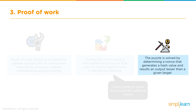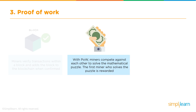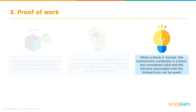The puzzle is solved by determining a nonce that generates a hash value resulting in an output less than a target. In any proof of work algorithm there is always a predefined target for a block. The miner uses the nonce to generate a hash which must be less than the target. Miners verify transactions within a block and add the block to the blockchain once verified. With proof of work, miners compete against each other to solve the puzzle. The first miner to solve it is rewarded, and the bitcoins associated with the validated transactions are deducted from the sender and moved to the receiver.